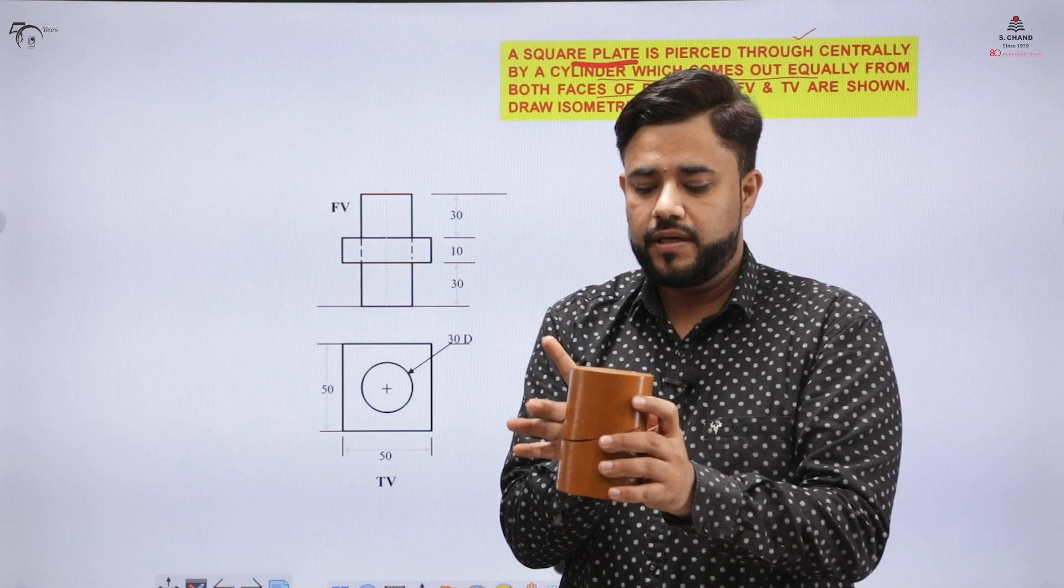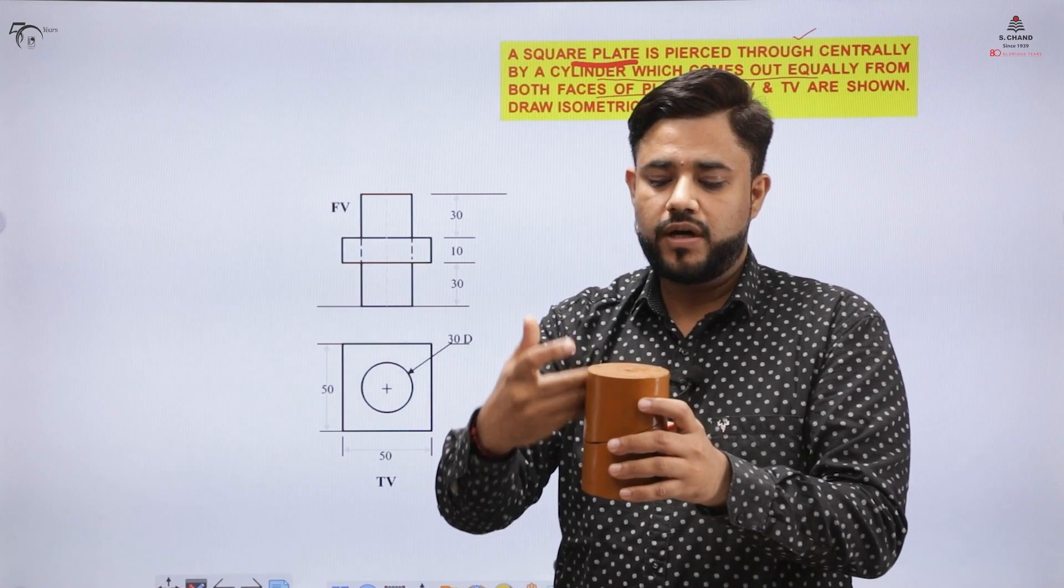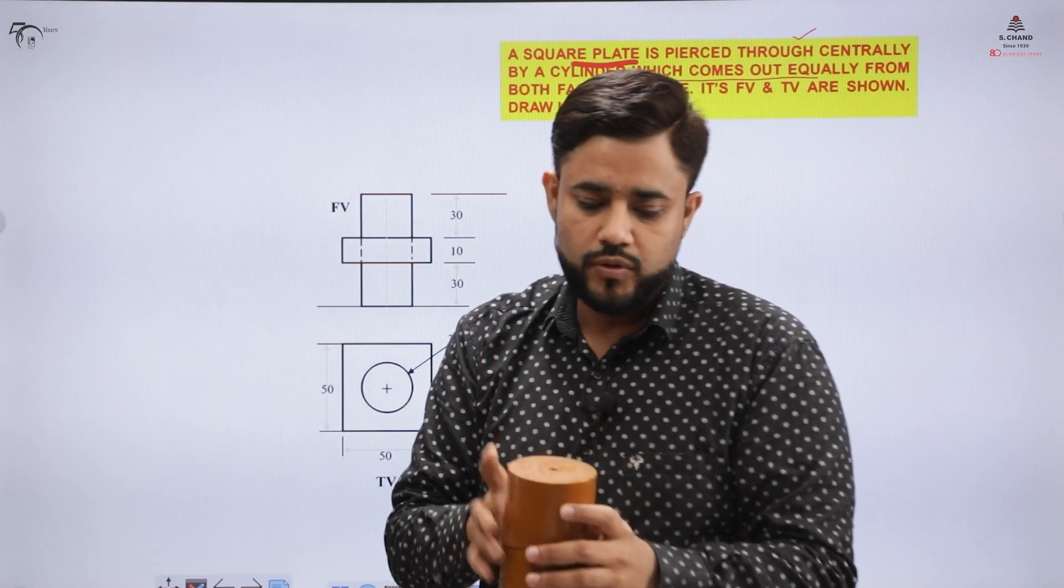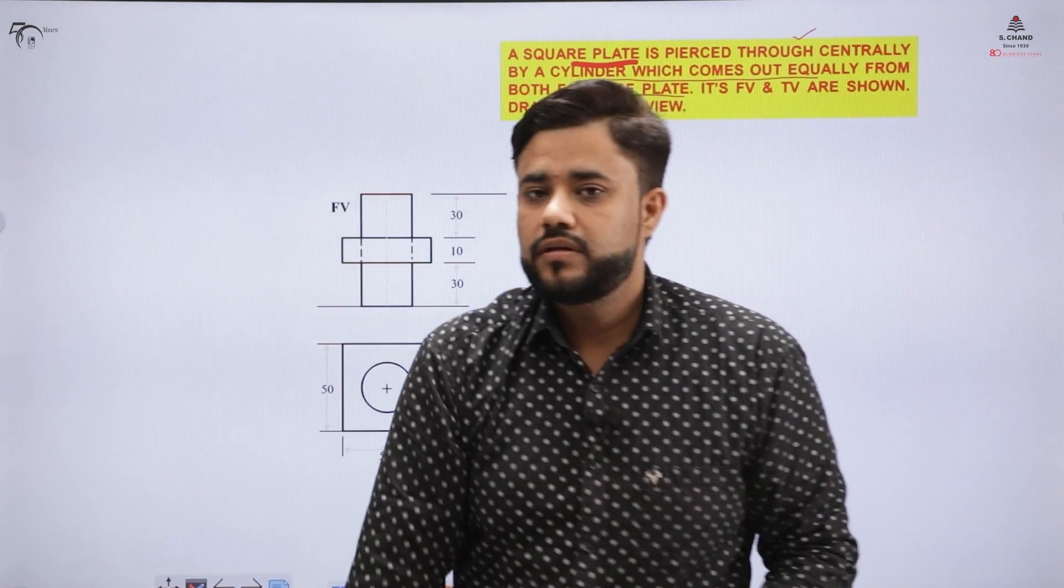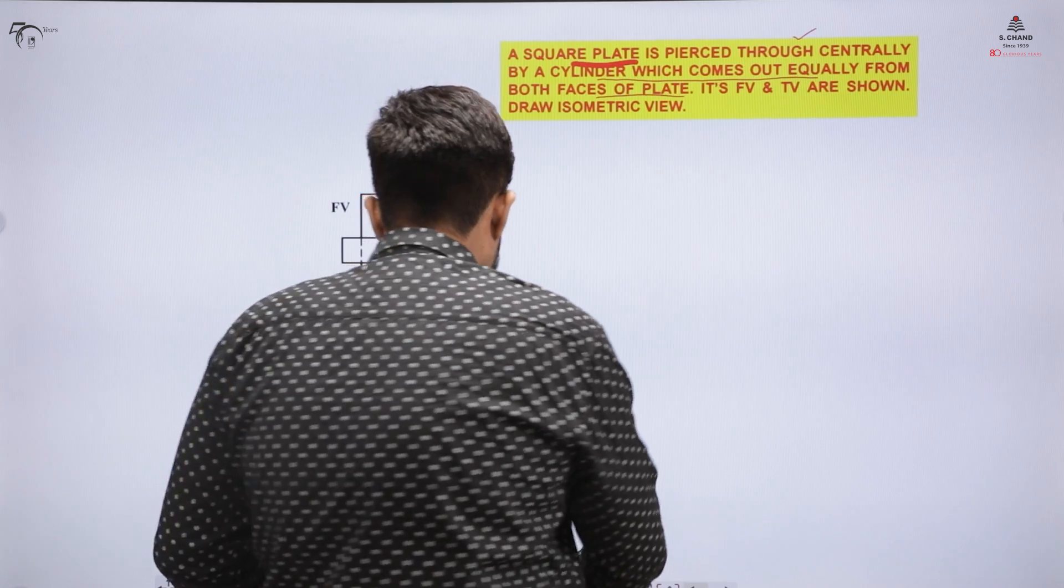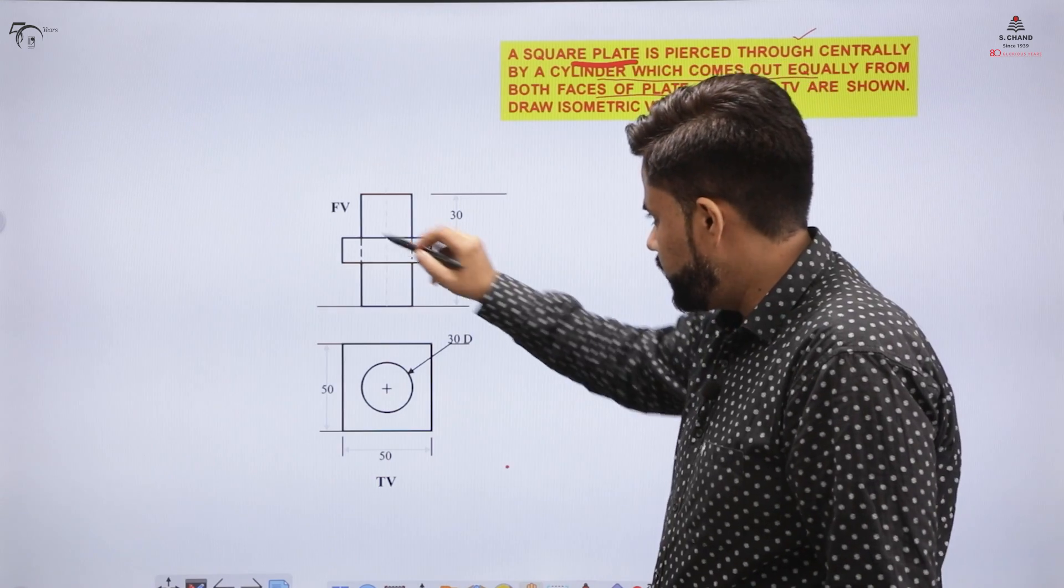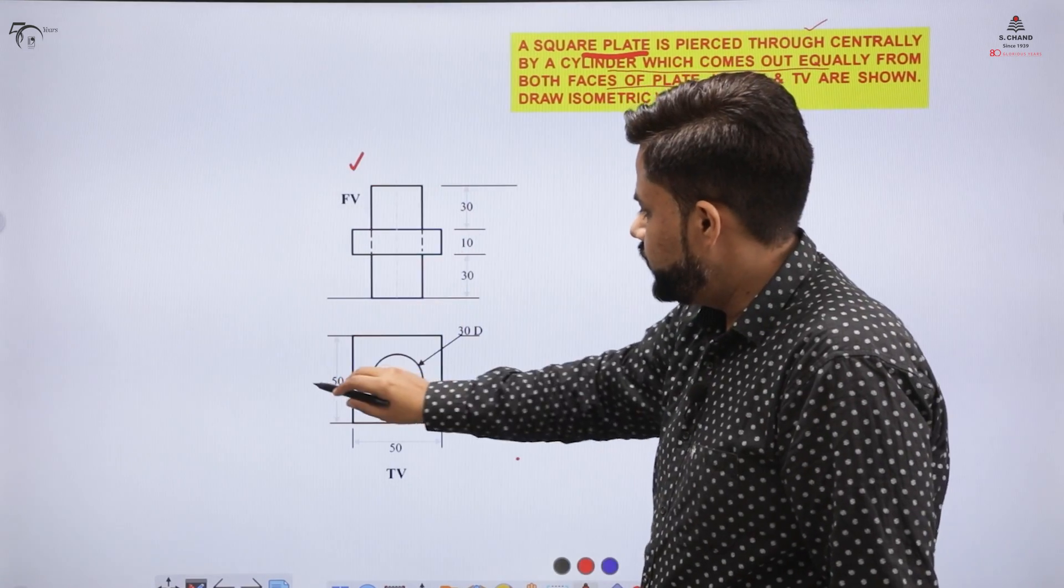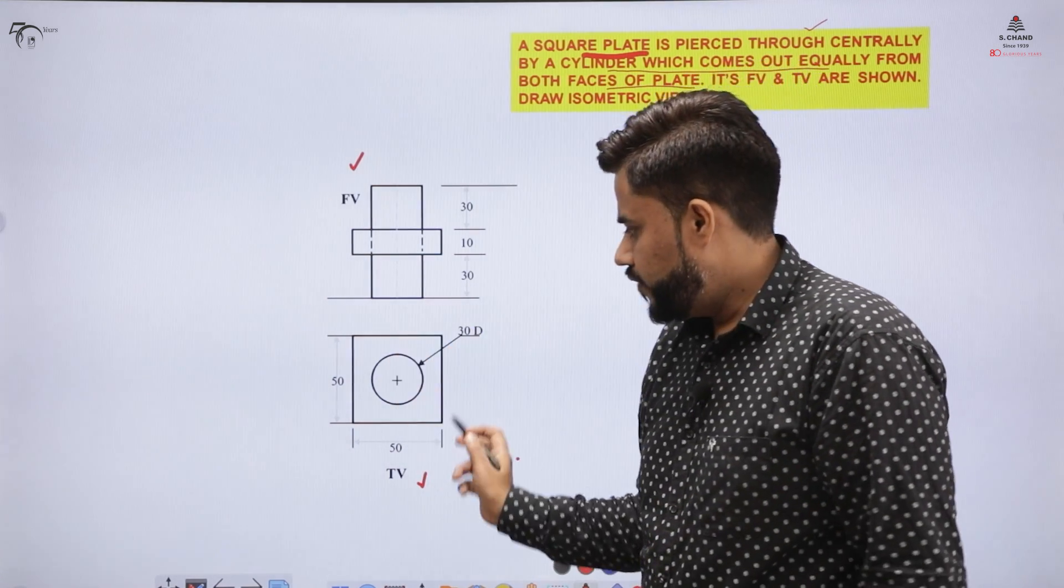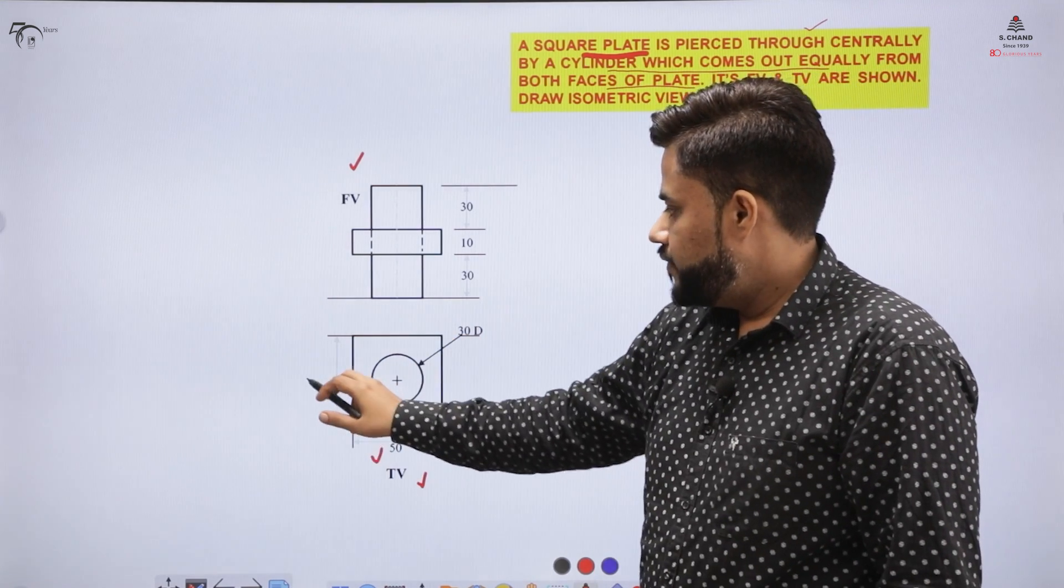This is the case in which there is a square plate and the cylinder is coming out from that square plate in this direction and also in the bottom direction. You are given with the orthographic view of the same. You are given with the front view and the top view. In the top view I have a square plate which is of the size 50 by 50.